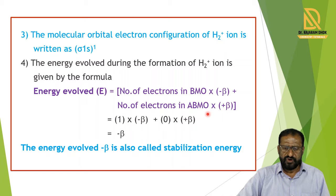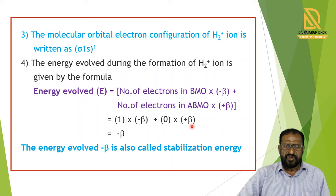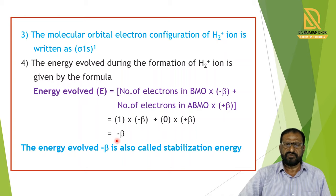We fill the values into the formula. In the bonding molecular orbital, one electron is present, so we write 1 times minus beta. In the antibonding molecular orbital, there are zero electrons, so we write 0 times plus beta. The total gives minus beta. So minus beta is the energy evolved in H2 plus Ion, and the stabilization energy is minus beta.